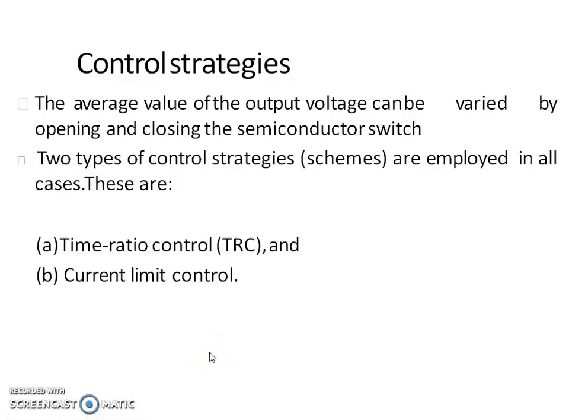In this lecture we are going to discuss different control strategies used to vary the output voltage of a chopper circuit. The average value of output voltage of a DC chopper circuit can be controlled by varying the duty cycle alpha. Duty cycle alpha is the ratio of on time to the total time period of the chopper circuit. By varying this duty cycle, or by varying the switching frequency of the chopper circuit, we can vary the average output voltage.